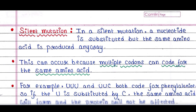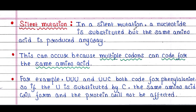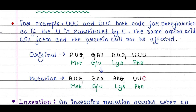Next is silent mutation. In a silent mutation, a nucleotide is substituted but the same amino acid is produced anyway. This can occur because multiple codons can code for the same amino acid. Here, in the original sequence, the base U is substituted by C, but both codons code for phenylalanine — so the same amino acid forms and the protein is not affected.